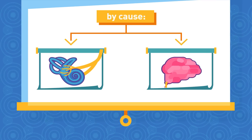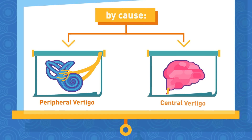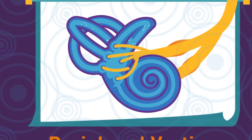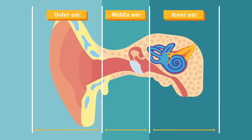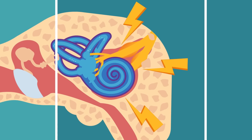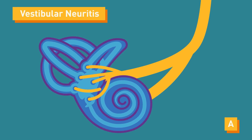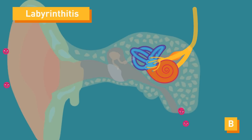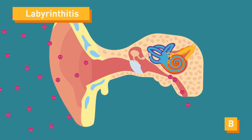Types of Vertigo: There are two possible causes of vertigo — peripheral vertigo and central vertigo. Peripheral vertigo refers to disorders that involve disturbances in the inner ear. Common disorders include vestibular neuritis, which is inflammation of the vestibular nerve responsible for taking nerve impulses from the semicircular canals to the brain, and labyrinthitis, which is inflammation of the labyrinth in the inner ear, often involving the vestibular nerve. Both are usually caused by a viral infection.